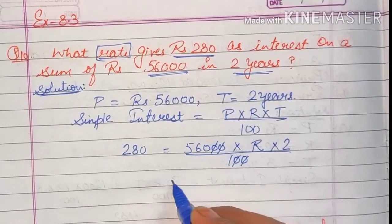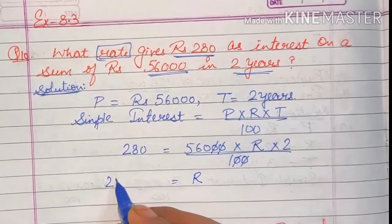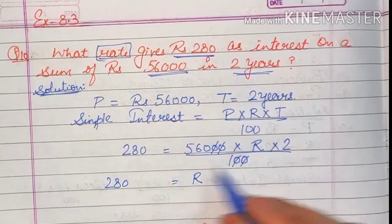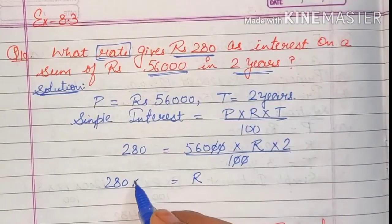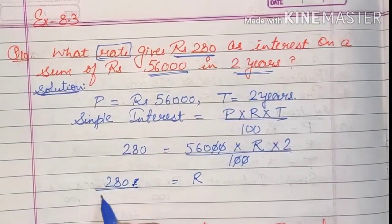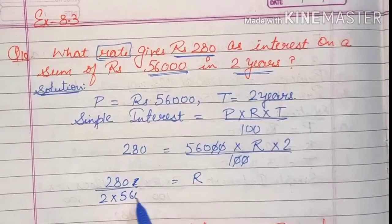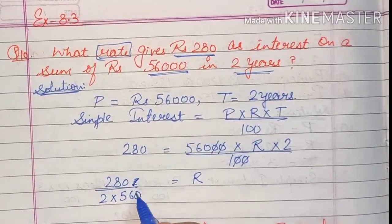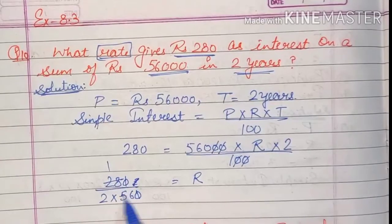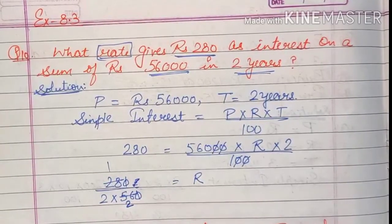So here to find R we will transpose 560 and 2 to the left hand side, so here it will be written as 2 into 560. So zeroes cancel, 280 divided by 2 into 560.